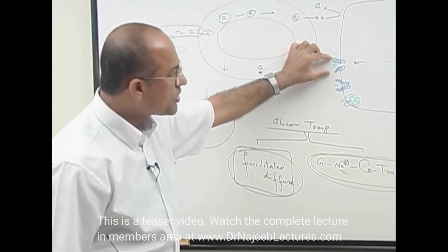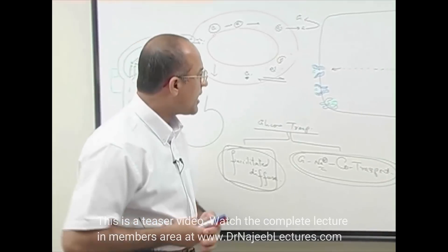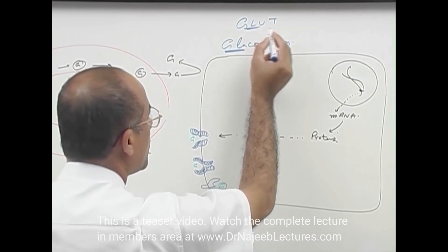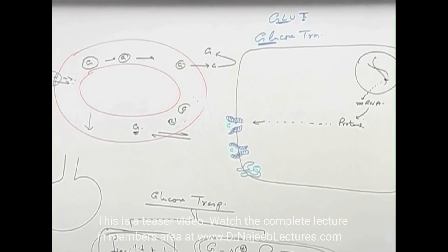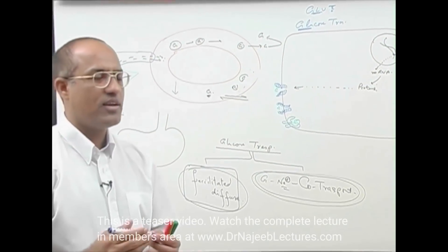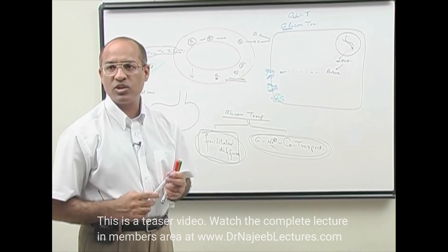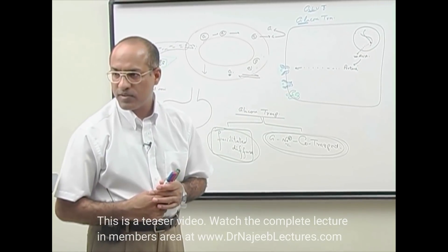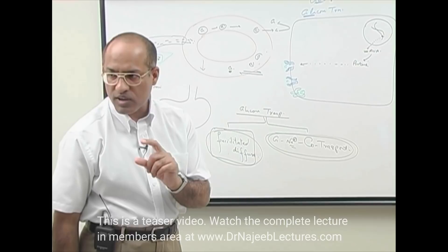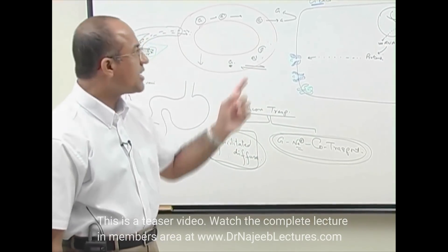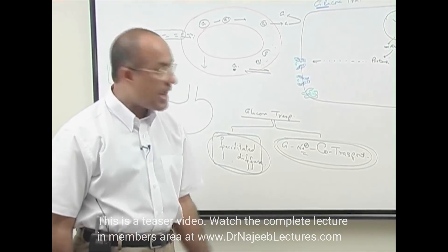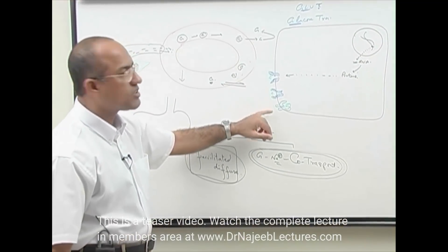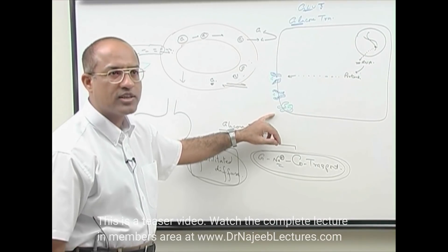This type of protein is called a glucose transporter. From 'glucose' and 'T' for 'transporters,' we simply call it GLUT. Up to now, about 14 different types of glucose transporters have been discovered, expressed in different tissues for different functions. You must know that glucose transporters are proteins. Once expressed on the cell membrane, they bind extracellular glucose and shift it to the intracellular environment. If glucose binds from inside, they will shift it to the outside as well.